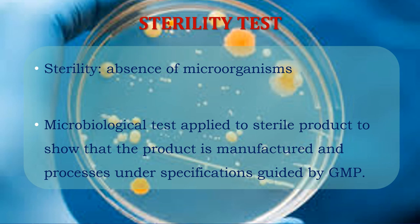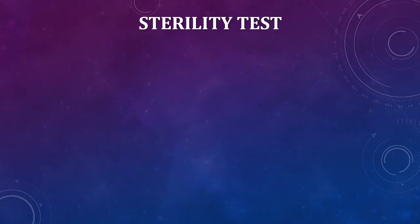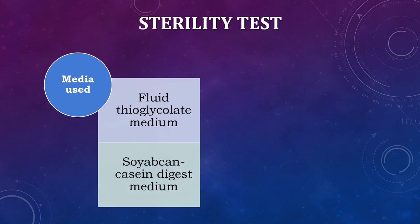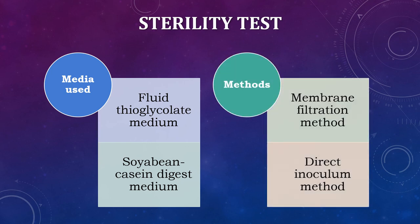The last test is the sterility test. Sterility is defined as the freedom from viable microorganisms. The sterility test is defined as a microbiological test applied to sterile products to show that the product is manufactured and processed under specifications guided by GMP. The sterility test is a destructive test; thus, it is impossible to test every item for sterility. We have to take samples and use them for sterility testing. Two types of media are used: fluid thioglycolate medium and soybean casein digest medium. There are two different methods: membrane filtration method and direct inoculum method. These methods will be seen in the next video tutorial.